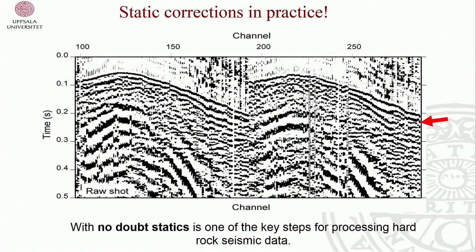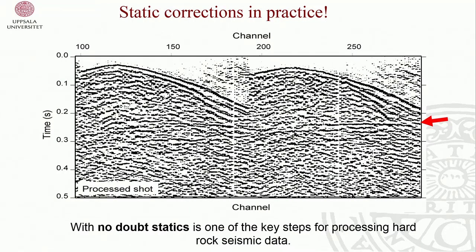We used the first breaks for reflection imaging, but also for delineating weakness zones. Showing two receiver lines, you can see first break undulations. After a little clean-up, you start seeing beautiful reflections corrected with the statics. Without doubt, one of the key processing steps for hard rock data is static correction — to get a good image, we have to deal with the statics.